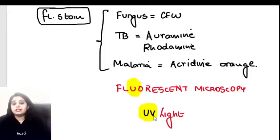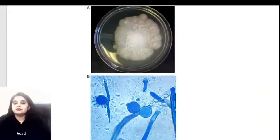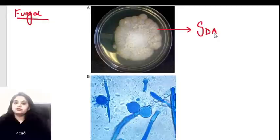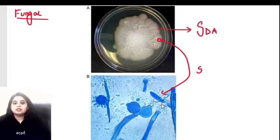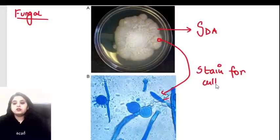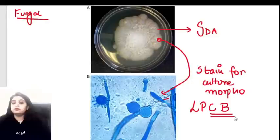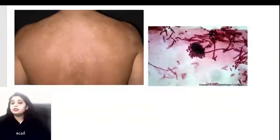Coming to the next image: when dealing with fungal etiology, the usual agar or culture medium used to grow fungal organisms is Sabouraud's Dextrose Agar. From the Sabouraud's Dextrose Agar culture, to study morphology, the stain used is Lacto Phenol Cotton Blue. Remember: SDA and LPCB - Lacto Phenol Cotton Blue. That is why you're seeing the blue color.